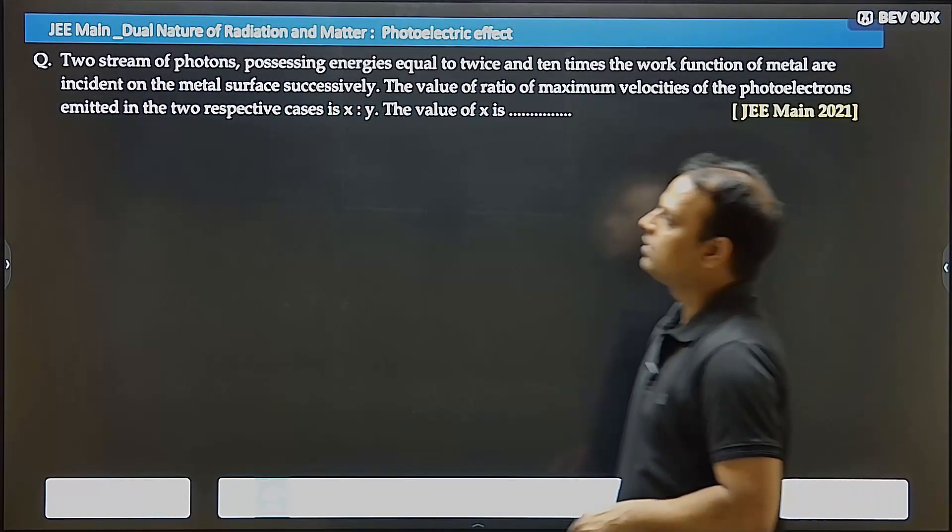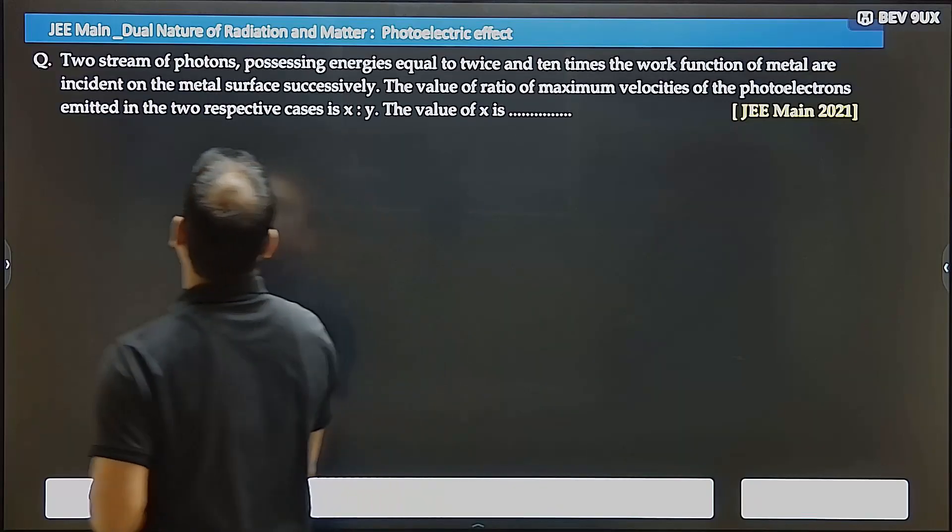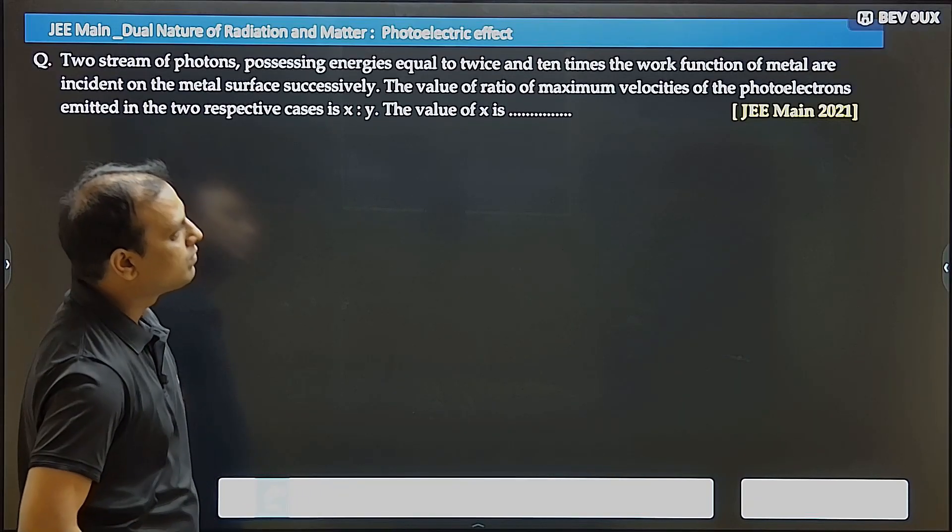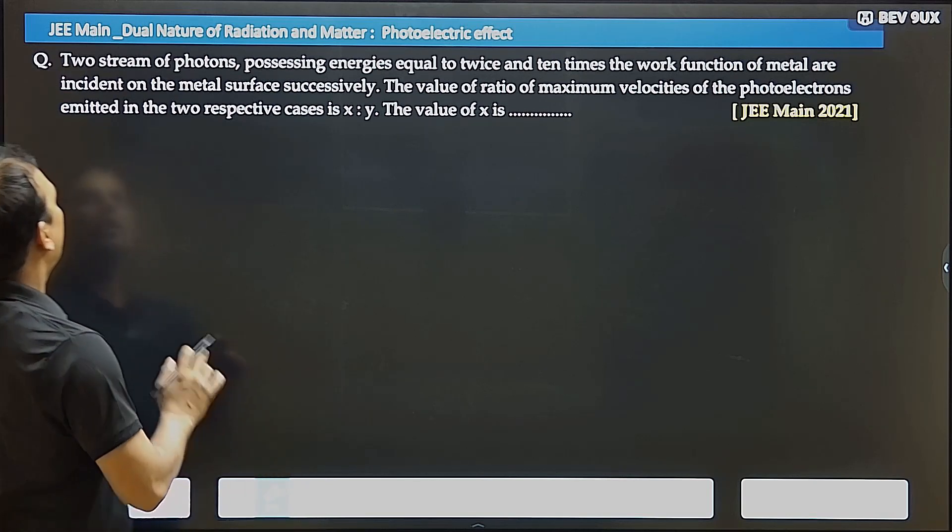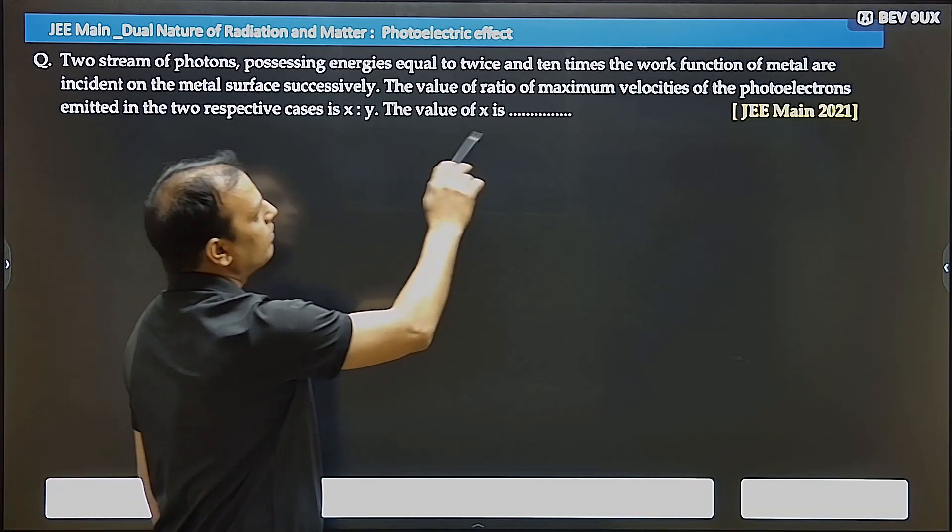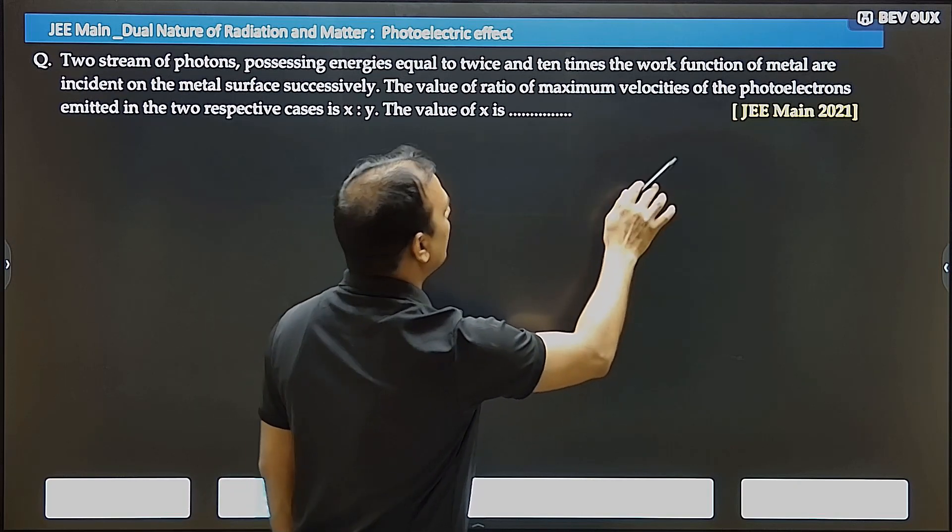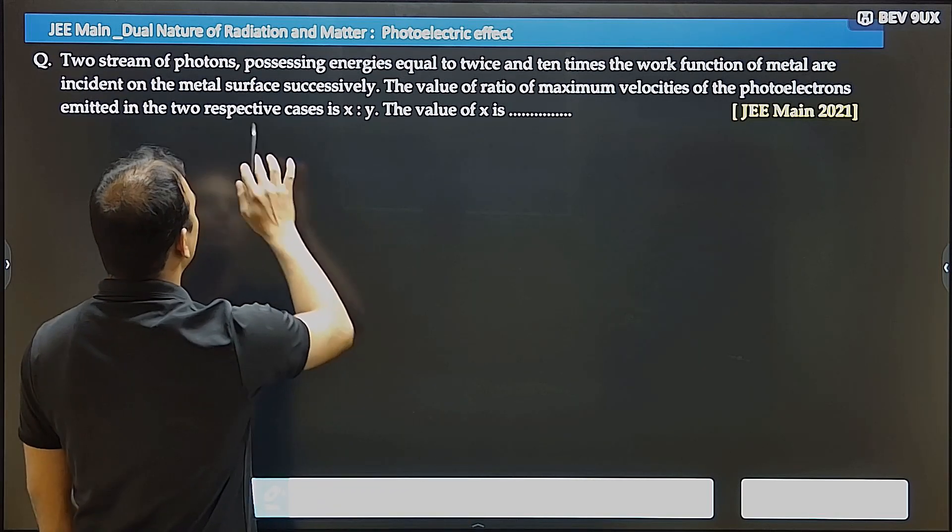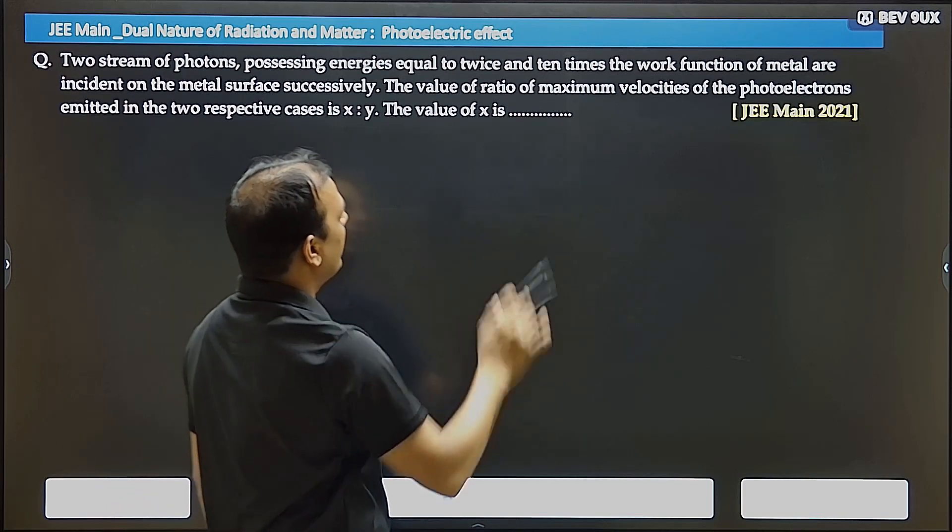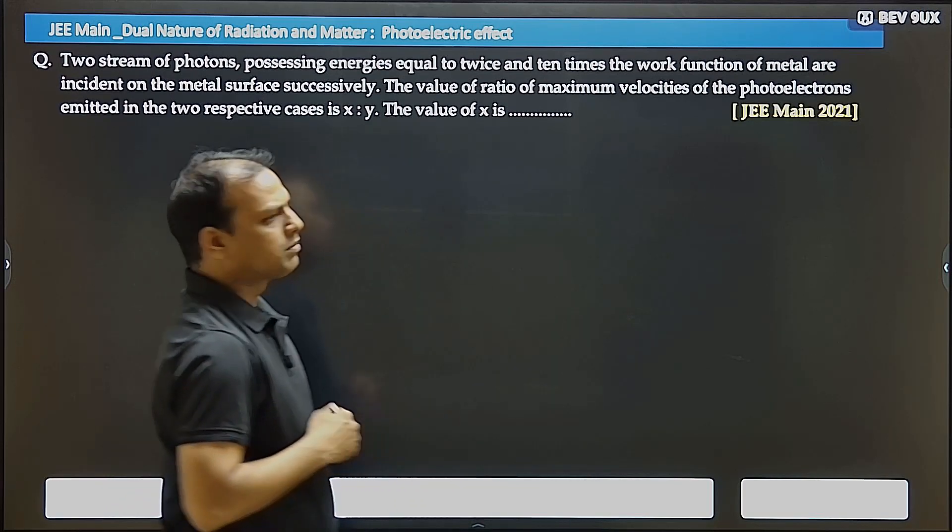Hello, first of all, what is given in the question? Two streams of photons possessing energies equal to twice and ten times the work function of metal are incident on the metal surface successively. The value of ratio of maximum velocities of photoelectrons emitted in the two respective cases is x:y. The value of x is... Okay, what is in the question?